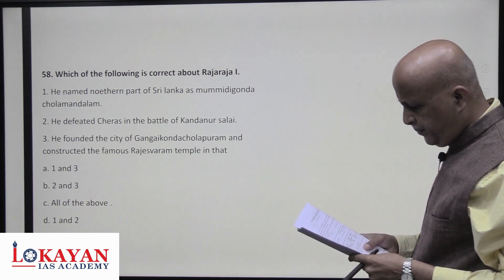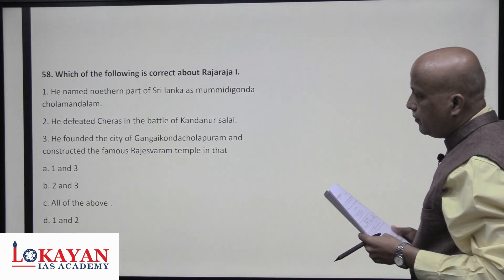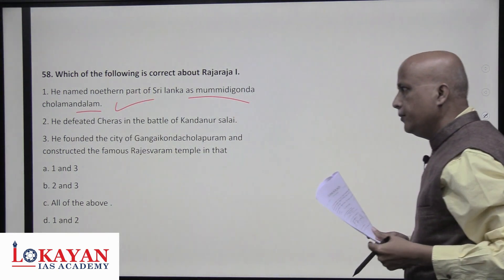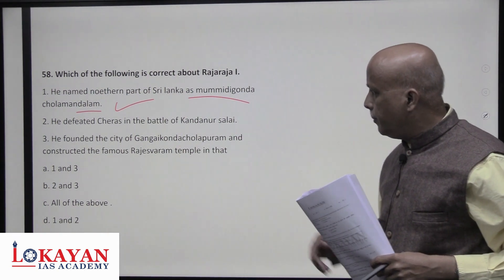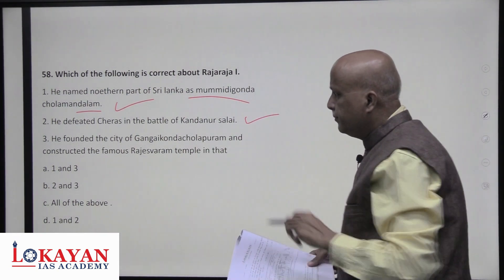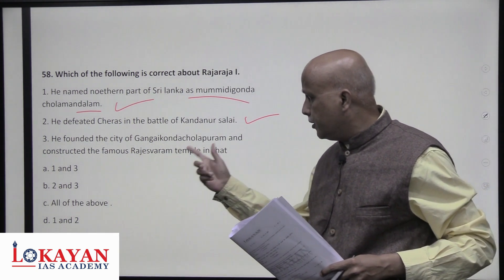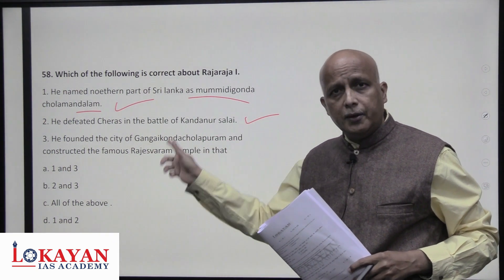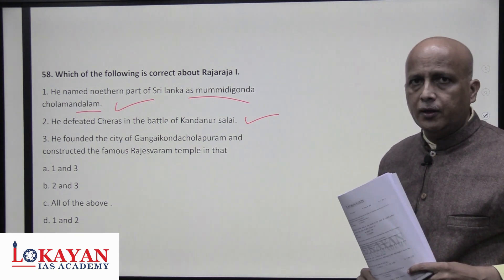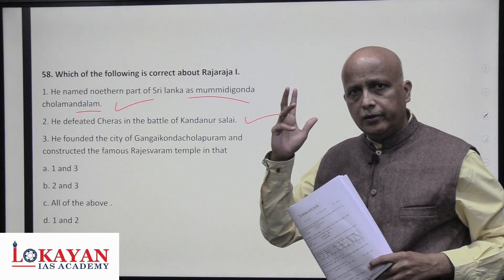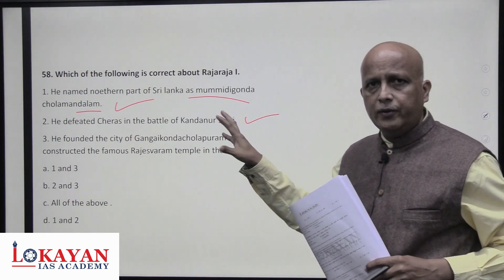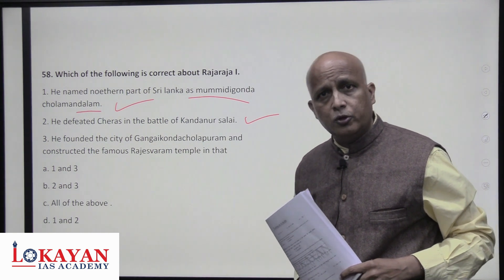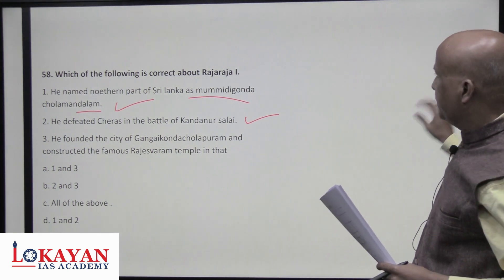Which of the following is correct about Rajaraja I? He named the northern part of Sri Lanka as 'Mummudi Chola Mandalam' — correct; he conquered northern Sri Lanka near Anuradhapura. He defeated the Cheras in the Battle of Kandalur Salai — correct. Regarding founding of Gangaikondacholapuram — that city was actually built by his son Rajendra I, who reached the Ganga and proudly took the title 'Gangaikonda.' So the third statement is not true. Statements one and two are correct.